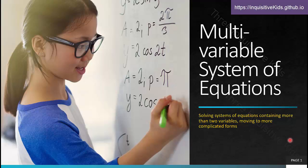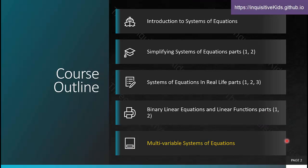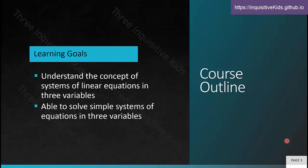Welcome to lesson 8, which is our final video for this unit, unit 5. We're going to look at multivariable systems of equations. You might have already heard of systems of linear equations in two variables, but what if we increase that amount? What if there were three variables in three equations — four, five, or even more? The two learning goals for today are to understand the concept of systems of linear equations in three variables, and to be able to solve simple systems of equations in three variables.